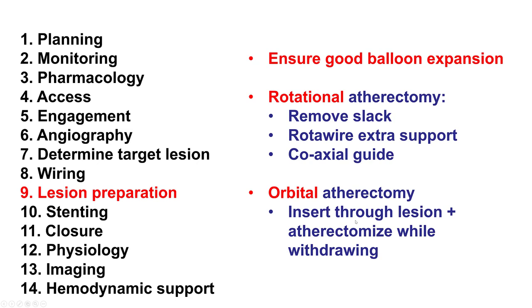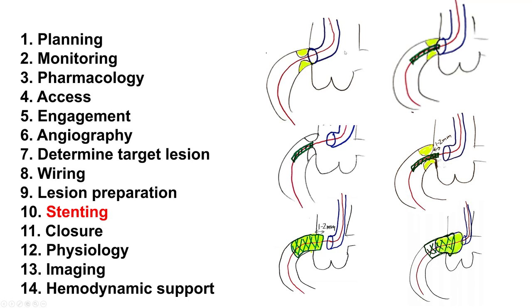These are the recommended steps for stenting osteal lesions. The first step is to engage, get the wire down, and then disengage the guide so there is no dampening. The stent is inserted while the guide is engaged, and then immediately after the stent is inserted, the guide is moved back.